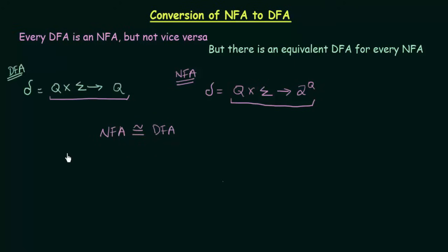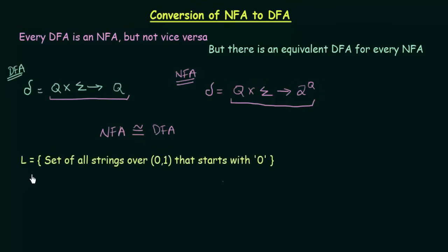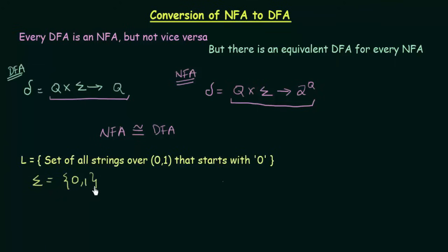To demonstrate this, let us take a simple example. We have a language L which is the set of all strings over 0 and 1 that starts with 0. Let us design an NFA for this language. Our input symbols sigma are 0 and 1.